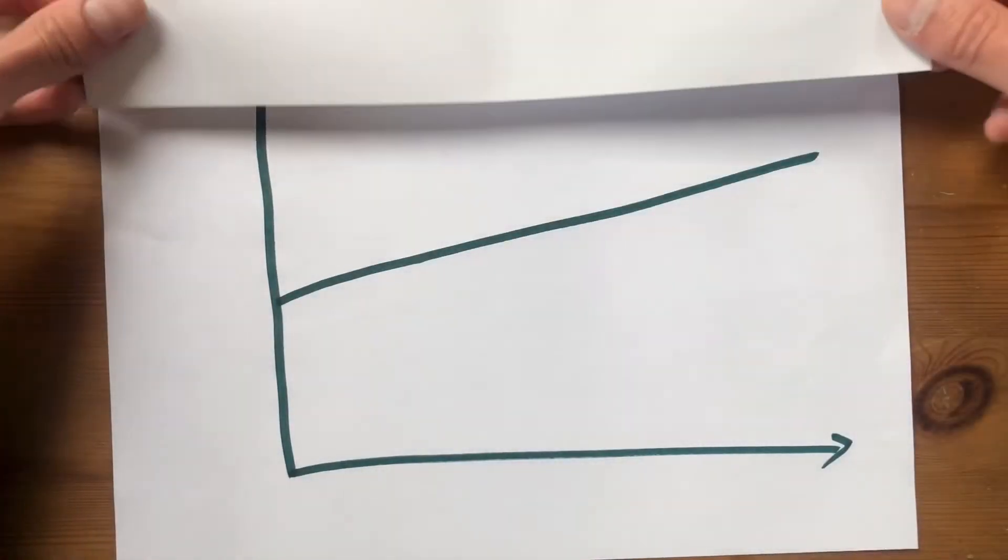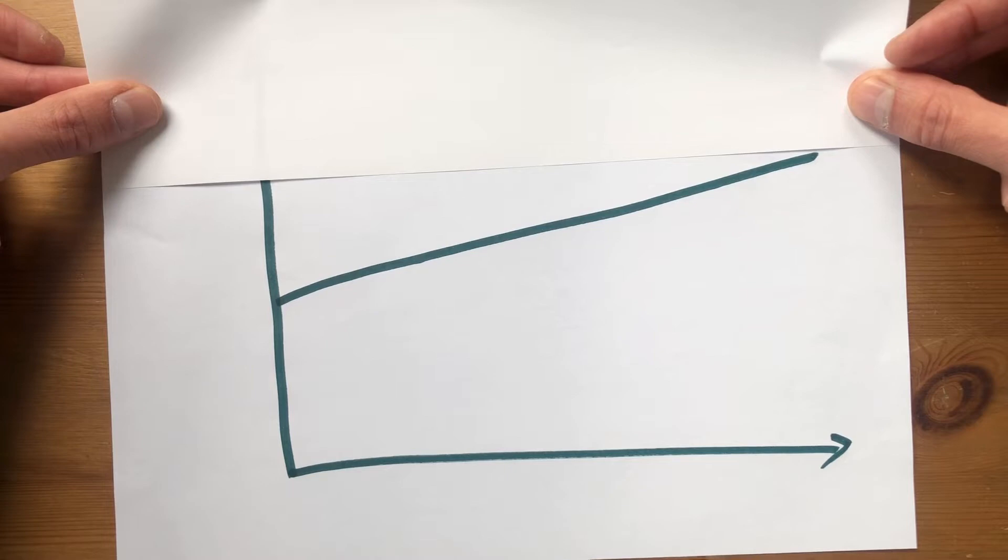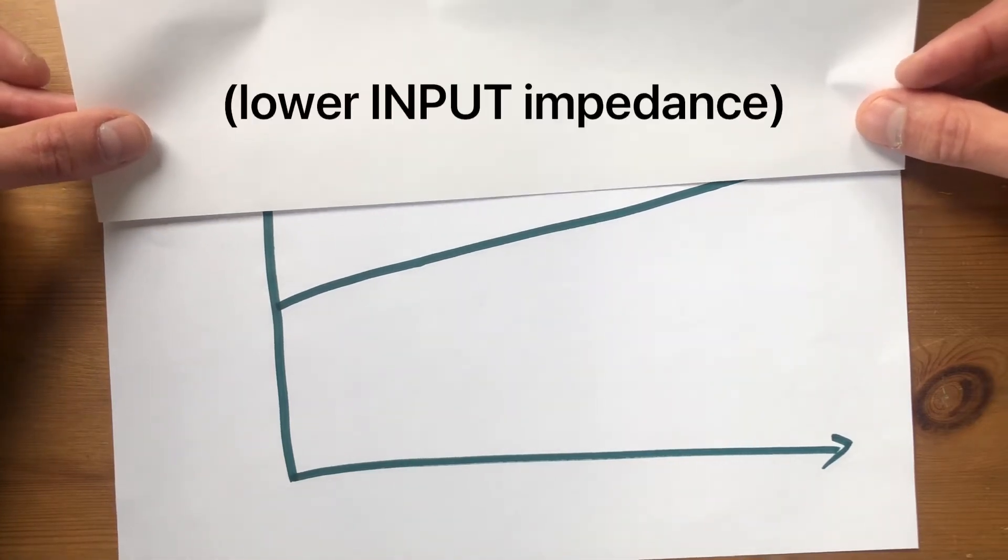Instead of plugging it into a tube amp, which is a nice high impedance device like this, let's imagine we plug it into a low impedance device like a vintage germanium fuzz pedal, which has a lower impedance.